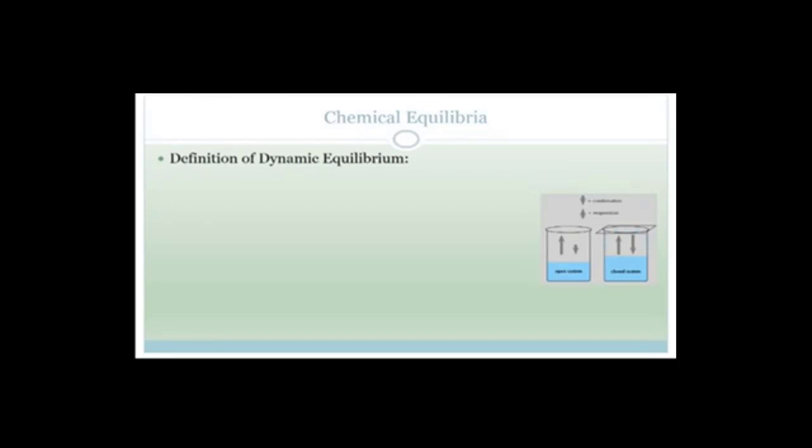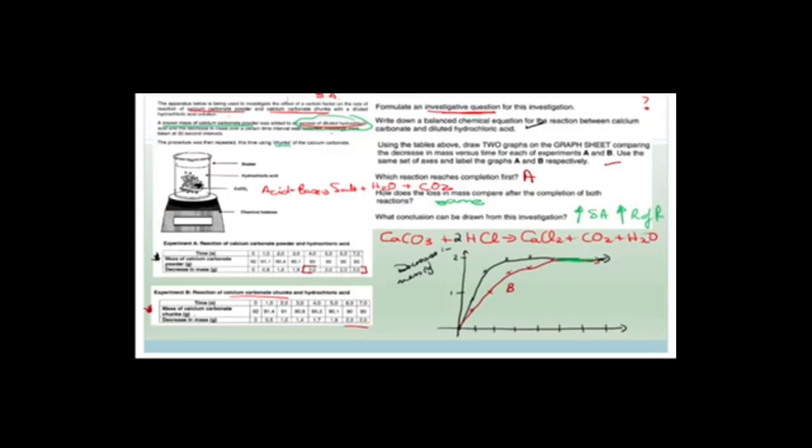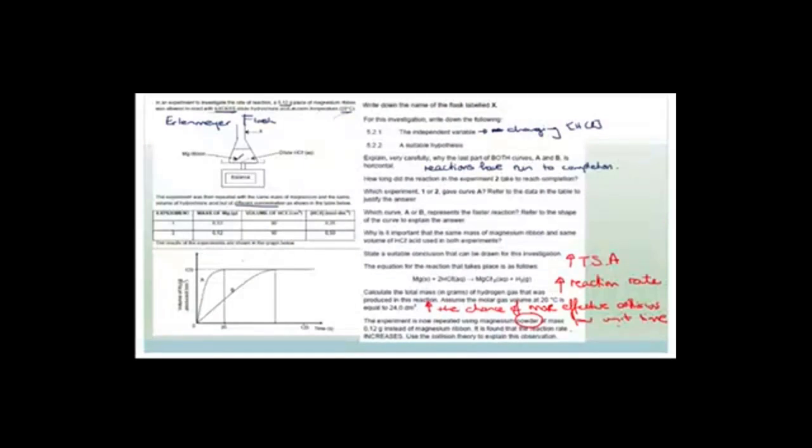So let's first talk about the definition of dynamic equilibrium. In this graph here, you see that it went flat. In the previous graph on rates of reaction, when the graphs go flat like this it means they have stopped, they have run to completion.